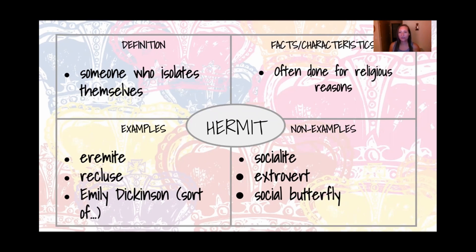Some examples: an eremite is really just another synonym for hermit, and a recluse. Emily Dickinson is sort of an example — this kind of applies to that recluse category. It's not exactly the same because someone like Emily Dickinson kept herself inside her house and talked to very few people, but she didn't necessarily physically isolate herself. She wasn't off in the wilderness, and that's more what we think of when we think of a hermit, but it's generally the same kind of person.